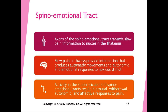The spinal emotional tract, also called the spinal limbic tract, transmits slow pain information to nuclei in the thalamus — meaning we are aware of it. Slow pain pathways produce automatic movements and autonomic and emotional responses to noxious stimuli. Activity in the spinal reticular and spinal emotional tracts results in arousal, withdrawal, autonomic responses, and affective responses to pain — things like blushing, turning red, becoming upset, or crying.